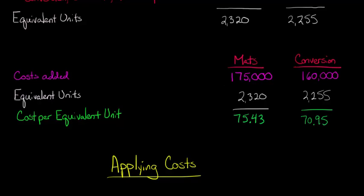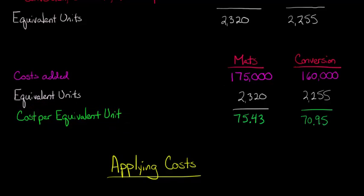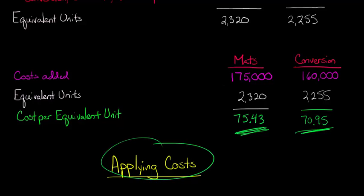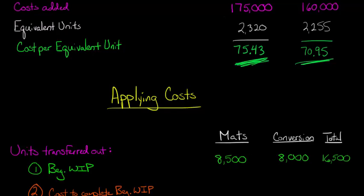In our last video we talked about how to calculate the cost per equivalent unit using the FIFO method. In this video I want to show you how to use the cost per equivalent unit we calculated for direct materials and conversion costs, and apply those costs to calculate the ending work in process inventory and the total costs of the units transferred out.